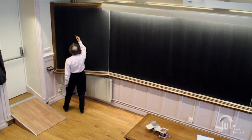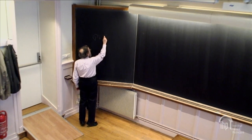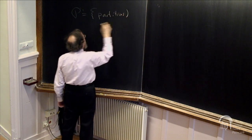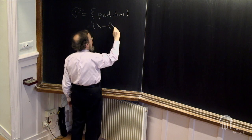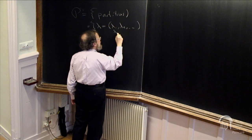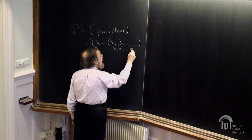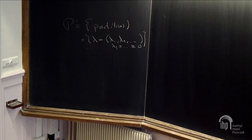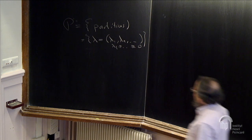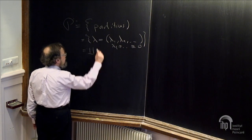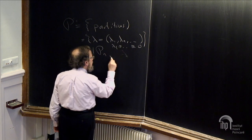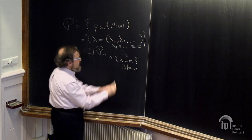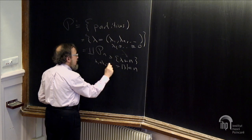I denoted P by the set of all partitions. We think of a partition as an infinite decreasing sequence of non-negative integers with only finitely many being non-zero. I write P_n for the set of lambda which are partitions of n, meaning the size of lambda — the sum of the parts — equals n.